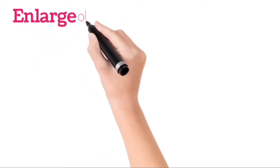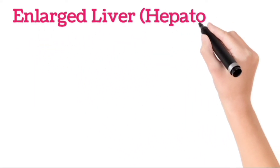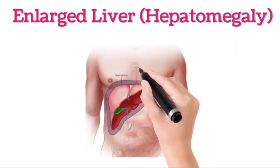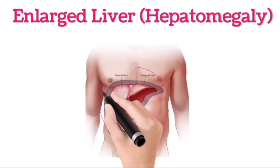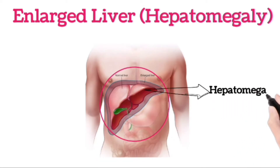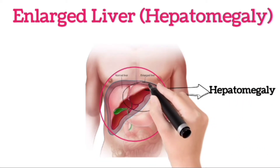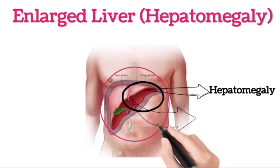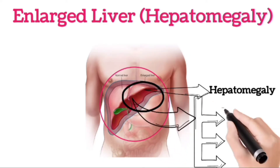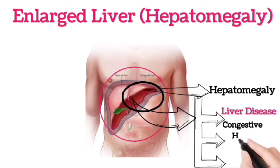Today we are discussing a very important topic: enlarged liver, or hepatomegaly. An enlarged liver is one that is bigger than normal. The liver is a large, football-shaped organ found in the upper right portion of your abdomen. Enlarged liver is not a disease; it is a sign of an underlying problem such as liver disease, congestive heart failure, or cancer.